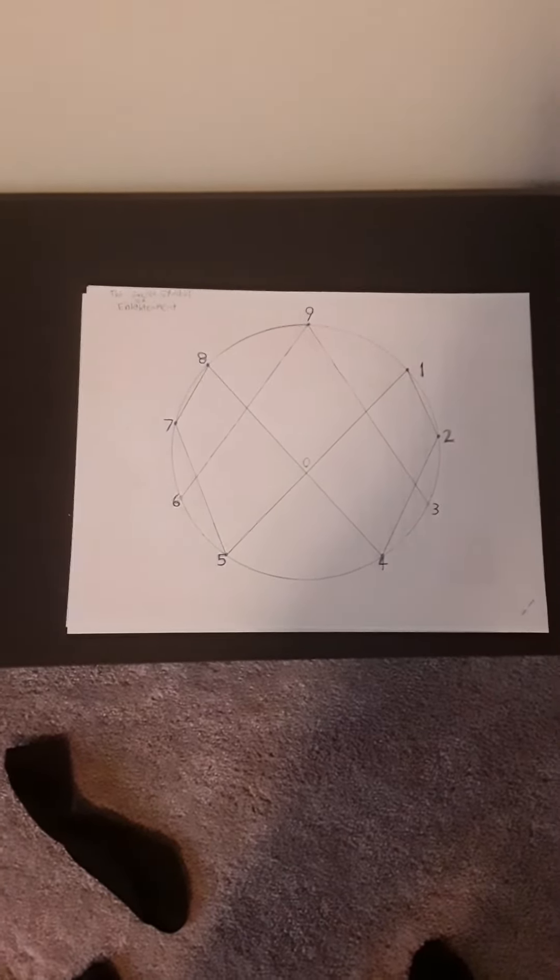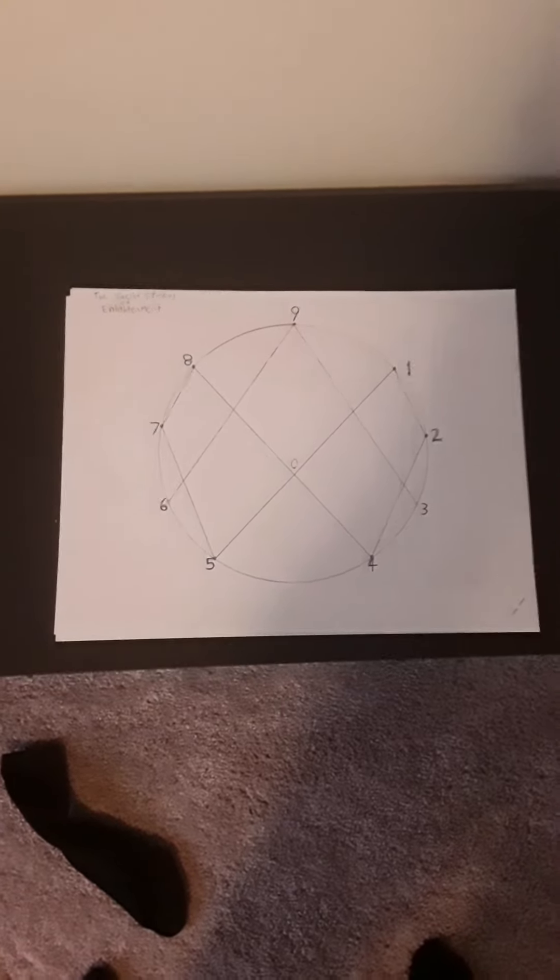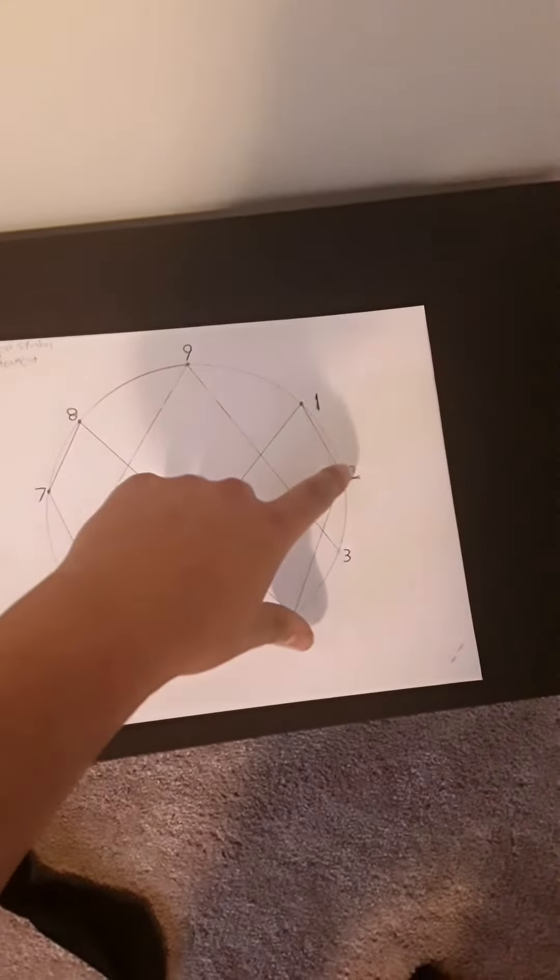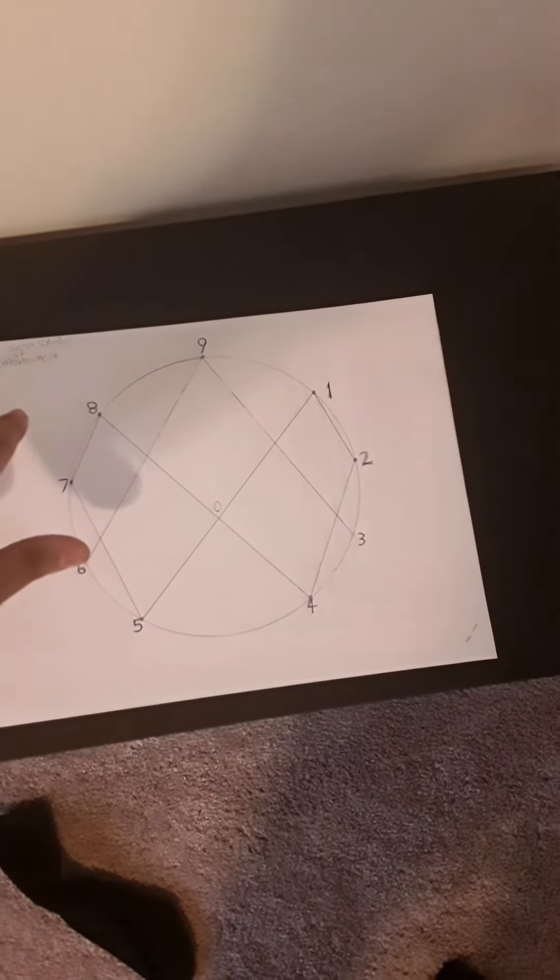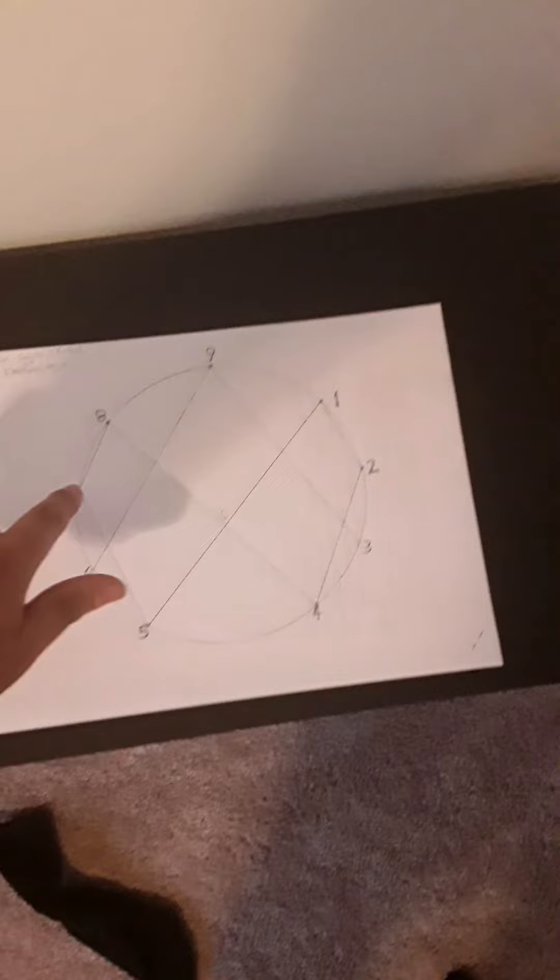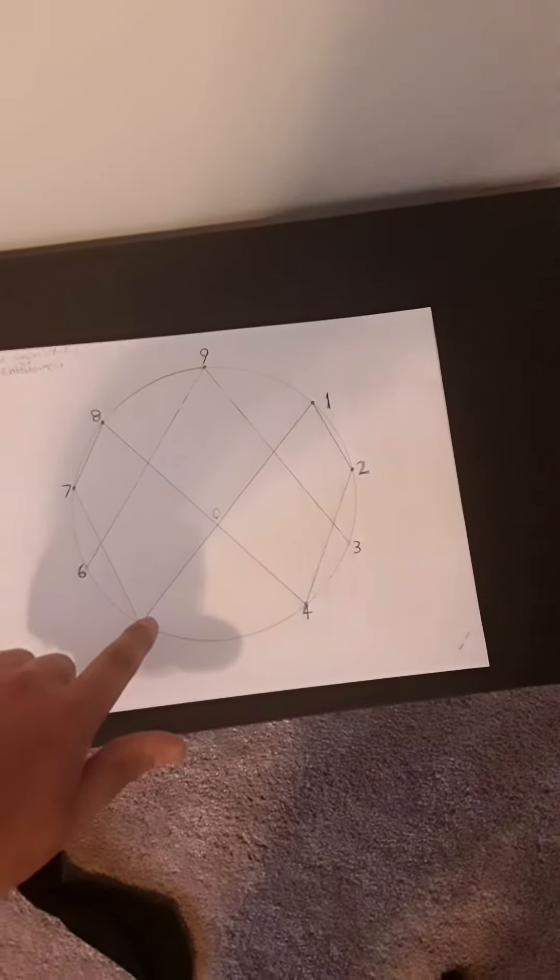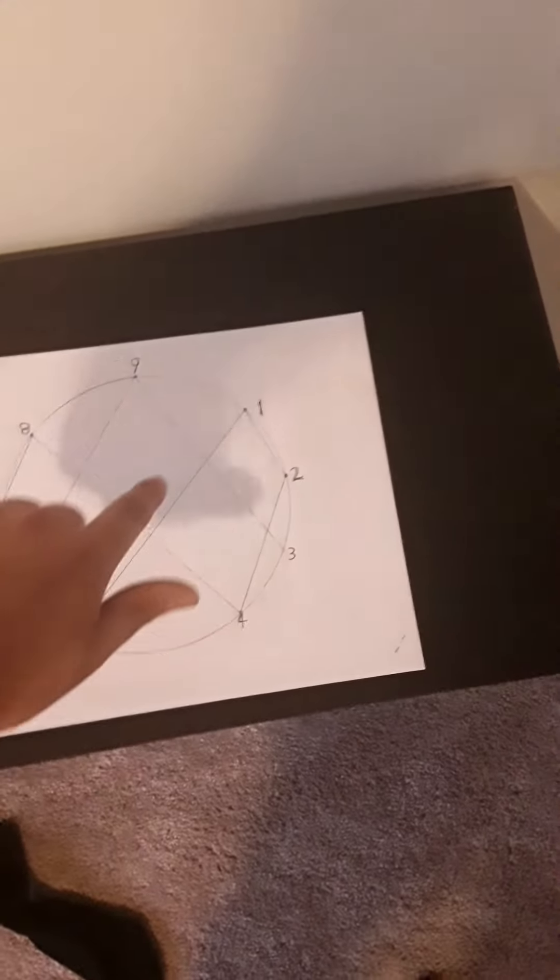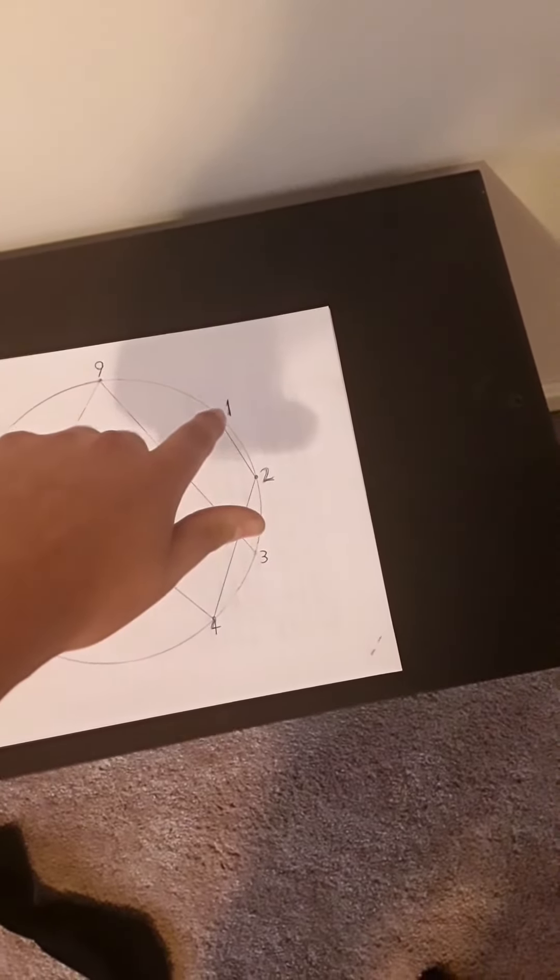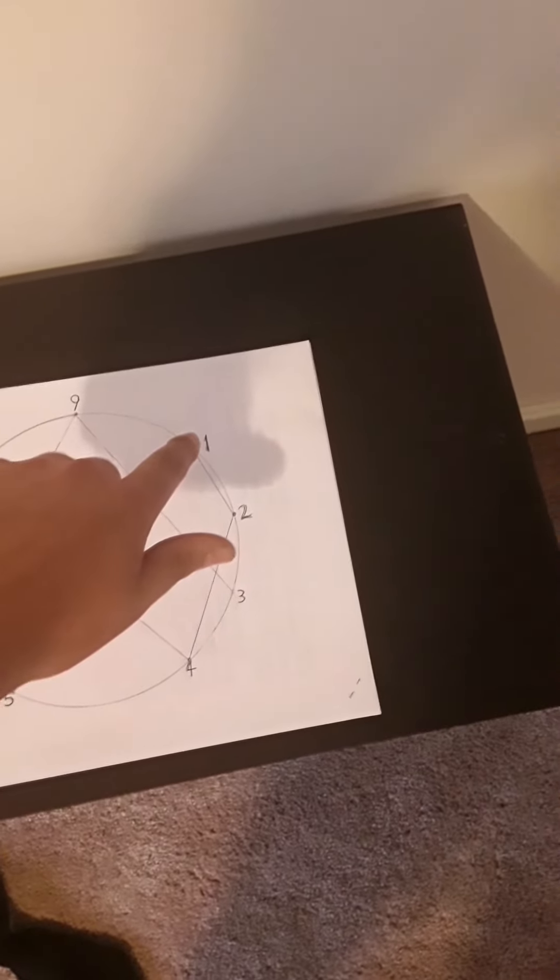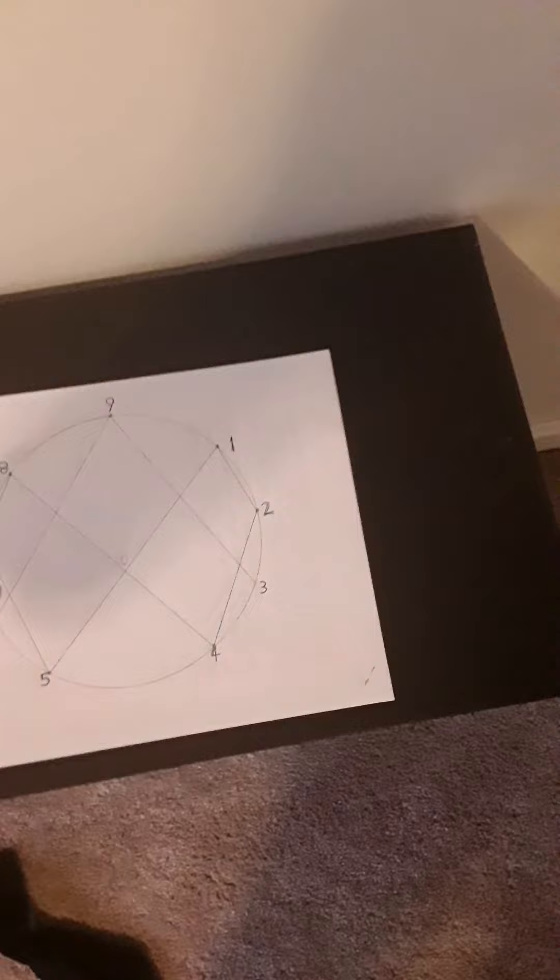When you follow one, one doubled is two, so you follow that line goes to two. Two doubles is four, four doubles is eight, eight doubles is 16 but 1+6 is seven. 16 doubles is 32, 3+2 is five. 32 doubled to 64, 6+4 is 10, 1+0 is one. No matter how far you double, you get 1-2-4-8-7-5, 1-2-4-8-7-5.